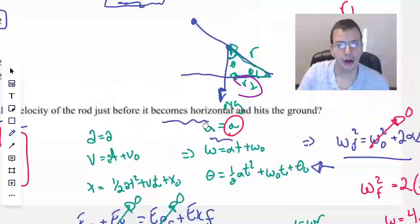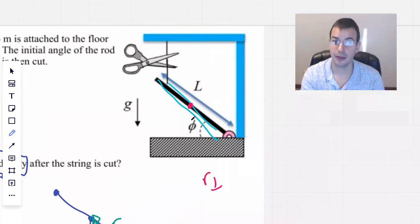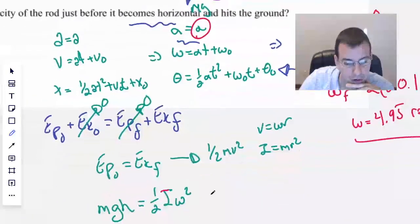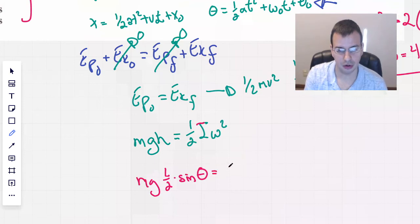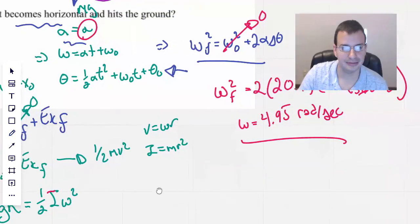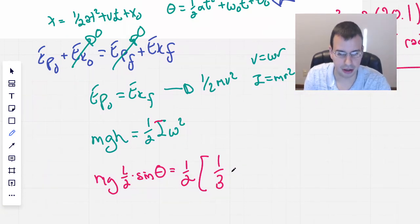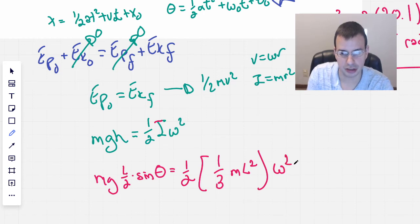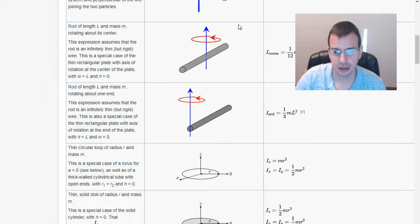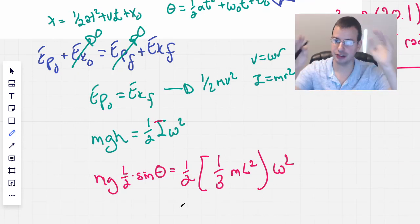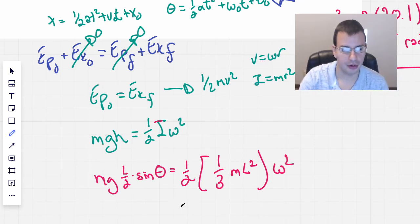So then we have MGH. The height is going to be L over 2 times sine of theta. Where did that come from? We're going to look at all the mass basically at this point right there. This distance will be L over 2. This will be theta. And then to find that height will be the sine of theta. So we have MG L over 2 sine of theta equals one half. And we already had I. It's going to be one third M L squared times omega squared. Looking back at our moments of inertia, one third M L squared. I was right. And we don't have to divide the L by 2, because that equation automatically assumes that it's at the end of a rod. So before we had to divide by 2 for finding the center of mass, that doesn't apply to this moment of inertia here.